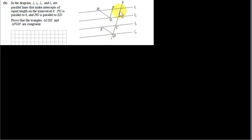In the diagram, L1, L2, L3, and L4 are parallel lines that make intercepts of equal length on the transversal K. This is the transversal — a line that cuts across a set of parallel lines. It's not parallel to these lines, and it makes equal intercepts, so the distance from this point to this point is the same as the distance from this point to this point, and we're given that it's equal to CD as well. So those three distances are the same.